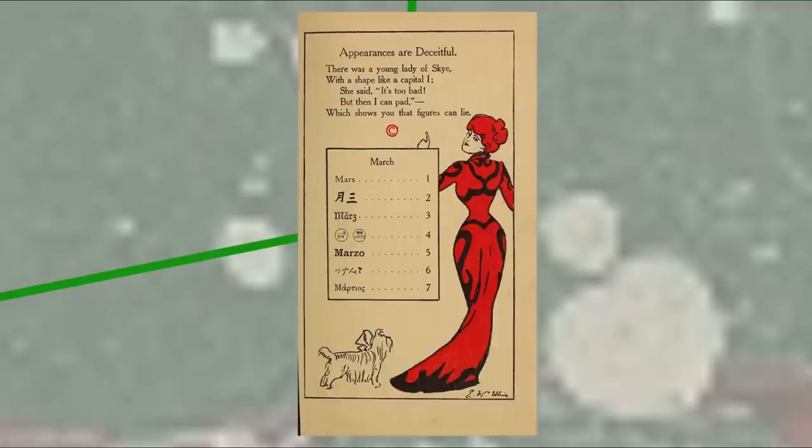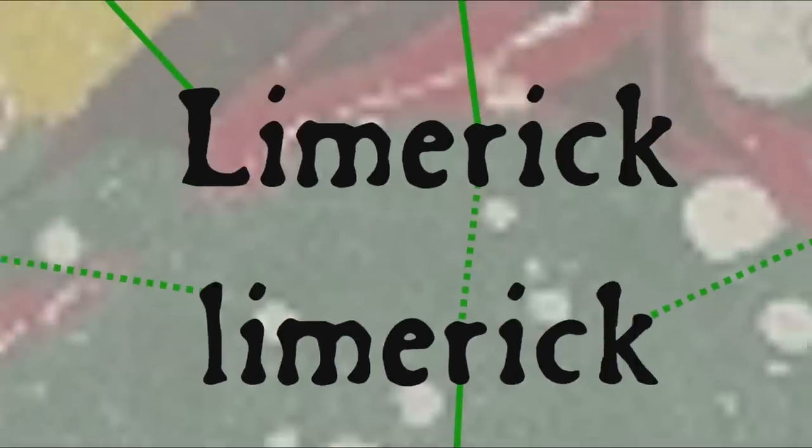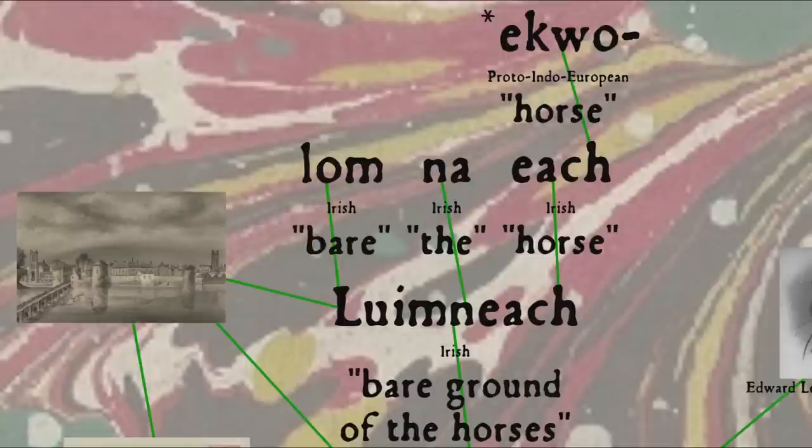A more homegrown English poetic genre is the largely oral and often bawdy genre, the limerick, which although it seems to date back at least as far as the 18th century, doesn't gain its name until the late 19th. The name may come from the county and city of Limerick in Ireland, possibly in reference to a parlor game in which participants make up a nonsense verse sung with the refrain line, will you come up to Limerick. The place name, Luimneach in Irish, means literally bare ground of the horses, from lom, bare, na, the, and each, horse, from the same Proto-Indo-European horse root, ekwo, that gives us the word equestrian. Alternatively, the word for the humorous poetic genre might come from Lear, in reference to Edward Lear, who popularized the form in the 19th century.